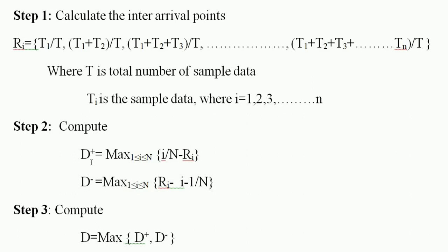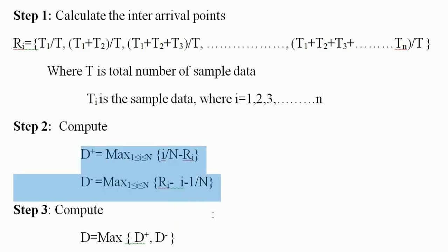In step 2, we compute D+ and D−. D+ equals the maximum of (i/n − ri) for 1 ≤ i ≤ n. D− equals the maximum of (ri − (i−1)/n) for 1 ≤ i ≤ n. These are the two formulas to calculate the D+ and D− values.